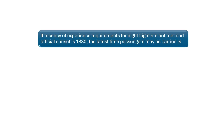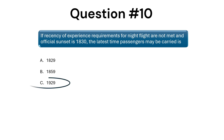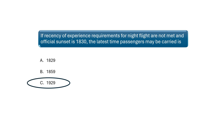If recency of experience requirements for night flight are not met and official sunset is 1830, the latest time passengers may be carried is — correct answer is C — 1929, since that is 59 minutes past official sunset. Private pilots who are not current for night flight may not fly one hour after official sunset.